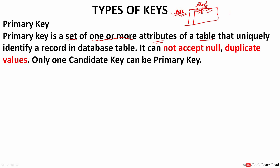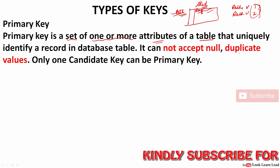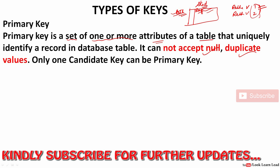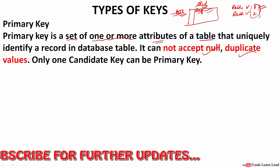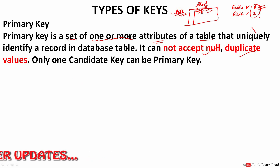Two different students can have the same name — suppose there can be a student called Rekha and another student also having the same name — but the roll numbers would always be different, so it would be the primary key. Duplicate values cannot be there and it should not accept null values; for the roll number there should be some value, the blank value should not be there. So for primary key: first, it should uniquely identify the record; second, it should not accept null values; and third, it should not accept duplicate values.